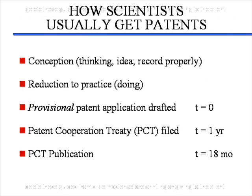How do inventors usually get patents? The procedure is as follows. The first step is conception — the idea or thinking part of the invention — and it should be properly recorded in your research notebook. The second step is reducing the invention to practice, which is the doing part. Once it is reduced to practice, the third step is to file a provisional patent application — this is what we call time zero. One year later, the PCT or Patent Cooperation Treaty application is filed, which allows you to file one application and hold the availability to file in all other countries at a subsequent date. The PCT application is published at 18 months.